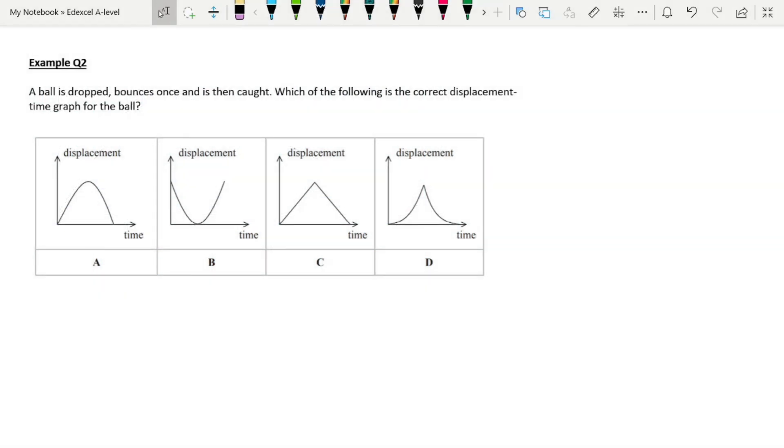Example 2. Bouncing balls is a classic with regards to motion graphs. This comes up a lot, and you need to be able to interpret these. Multiple choice question: The ball is dropped, it bounces once, and it is then caught. Which of the following is the correct displacement-time graph of the ball?